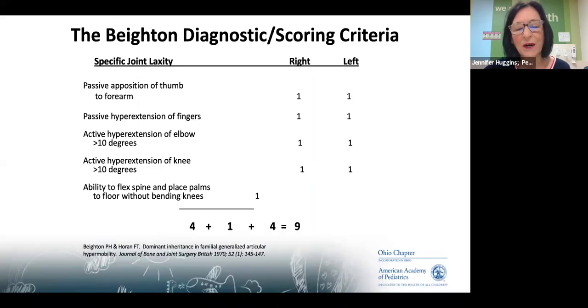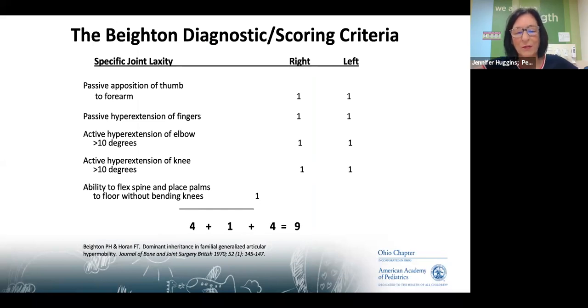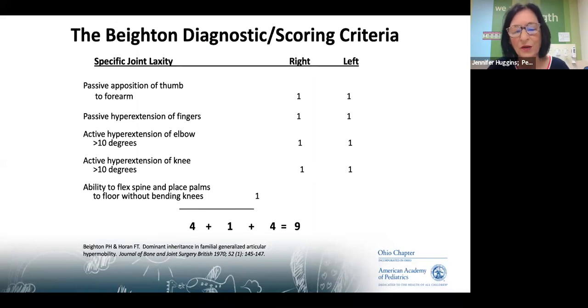For the Beighton scoring, you need a score of four or greater. Six of the points are in the upper extremity, two are in the knees, and one is whether you can put your palms on the floor.